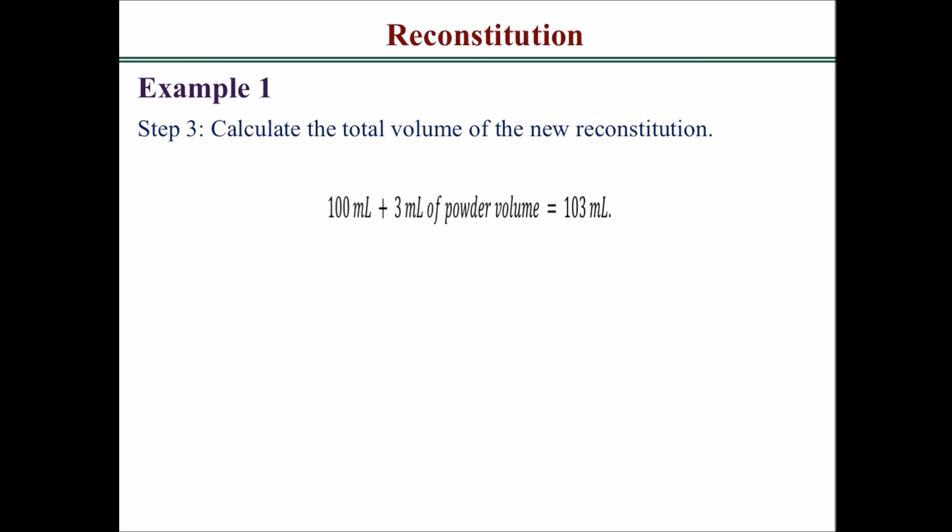So 100 ml was accidentally added and you got 3 ml of powder volume. The powder volume doesn't change. The powder volume is exactly the volume that the powder would fill in the bottle, so it doesn't matter how much diluent you added. It would be 100 ml plus 3 ml of powder volume, and you'd get a total of 103 ml.